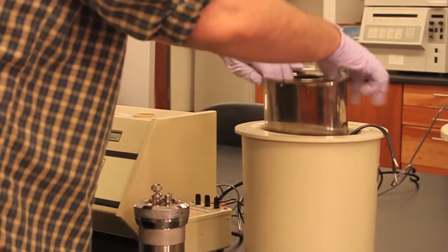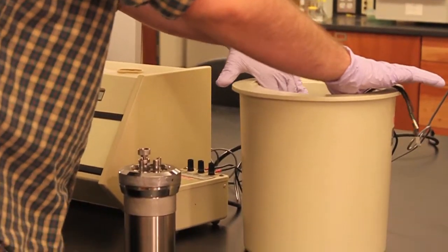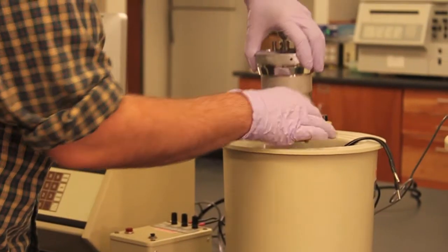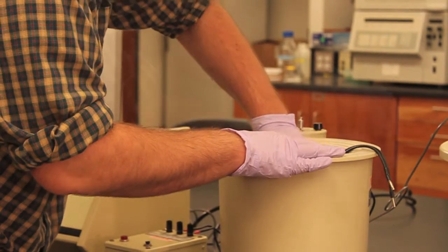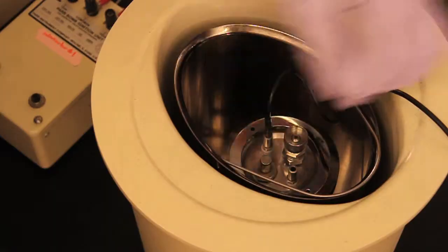Place the calorimeter pail into the calorimeter and the bomb into the calorimeter pail. Attach the leads from the igniter to the bomb.